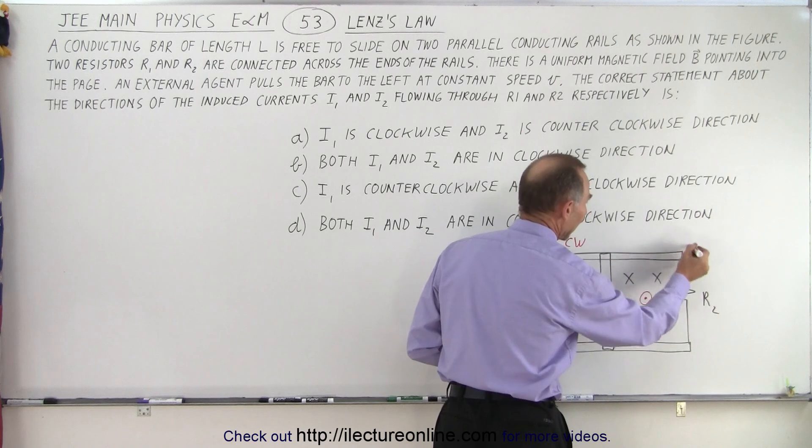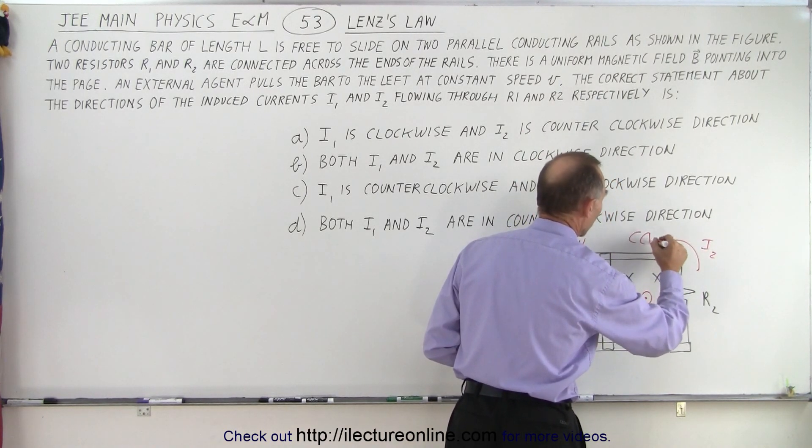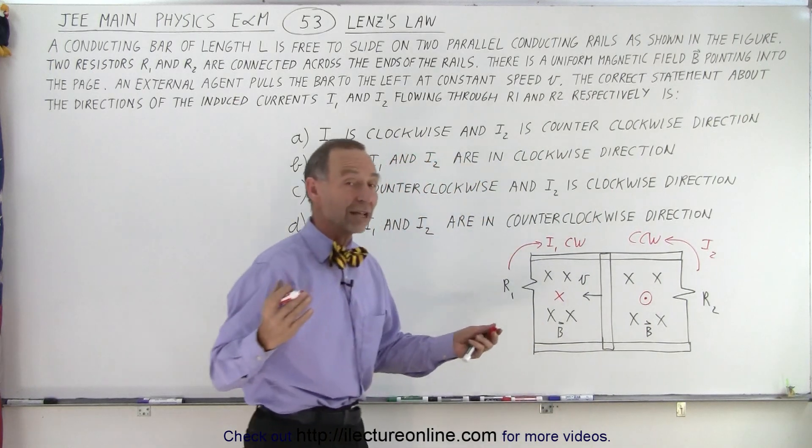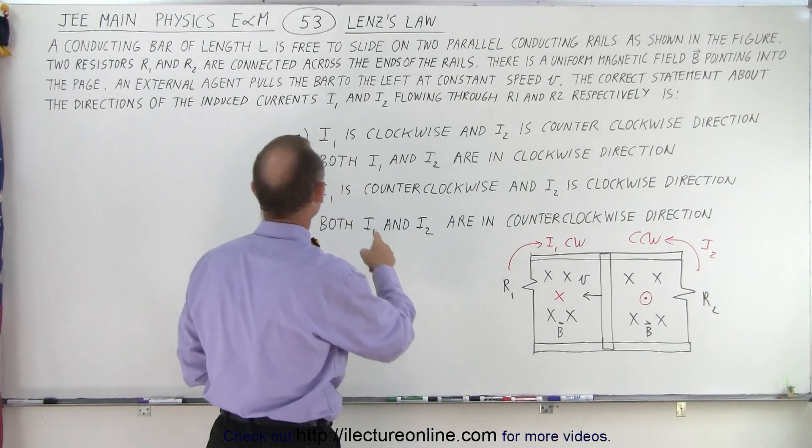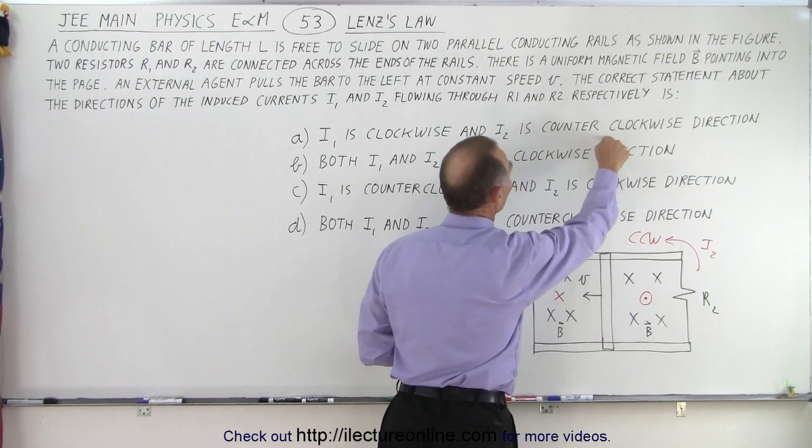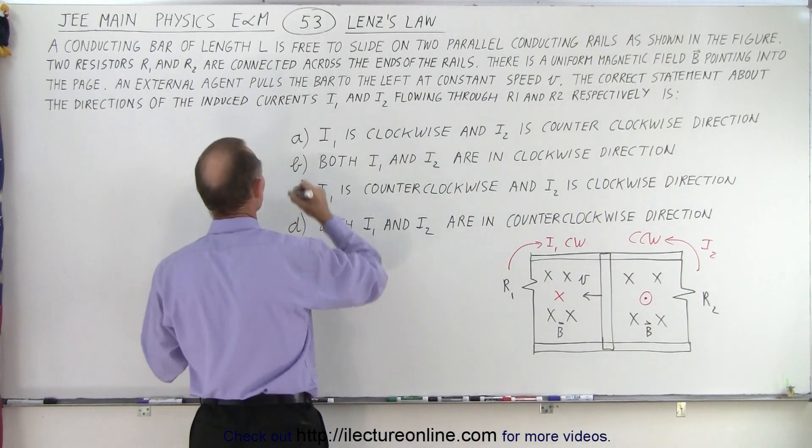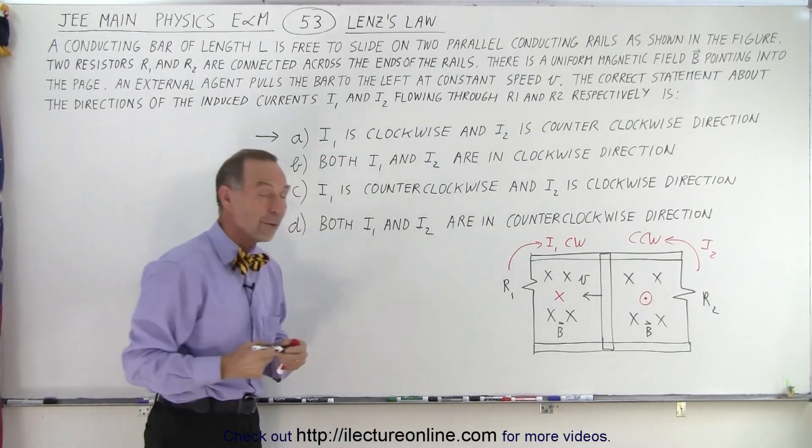And there's the answer. Well, we have to find which answer matches what we found. So I1 is clockwise and I2 is counterclockwise, which means that answer A is the correct answer. All other answers therefore must be wrong, and that is how it's done.